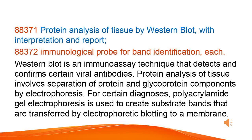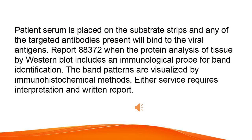Protein analysis of tissue by Western blot with interpretation and report. Immunological probe for band identification, each. Western blot is an immunoassay technique that detects and confirms certain viral antibodies. Protein analysis of tissue involves separation of protein and glycoprotein components by electrophoresis. For certain diagnoses, polyacrylamide gel electrophoresis is used to create substrate bands that are transferred by electrophoretic blotting to a membrane. Patient serum is placed on the substrate strips and any of the targeted antibodies present will bind to the viral antigens. Report 88,372 when the protein analysis of tissue by Western blot includes an immunological probe for band identification. The band patterns are visualized by immunohistochemical methods. Either service requires interpretation and written report.